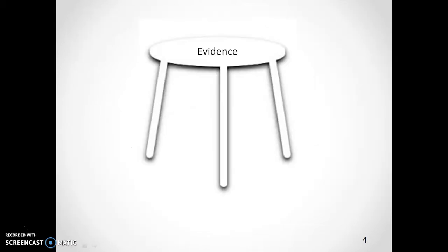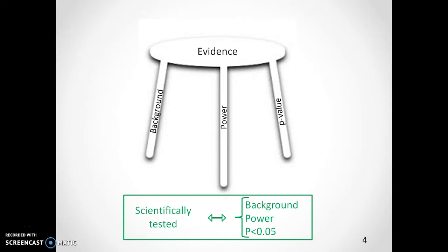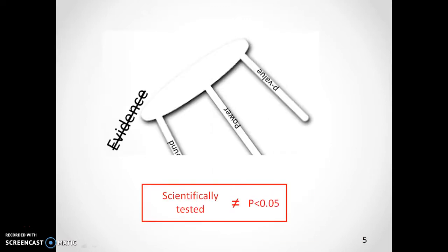The table of evidence is supported by three legs: a previous and good foundation, the power of the study, and a small p-value. They are all necessary. It is important to point out that a p-value of less than 0.05 does not support evidence by itself. The other two conditions have to be satisfied.